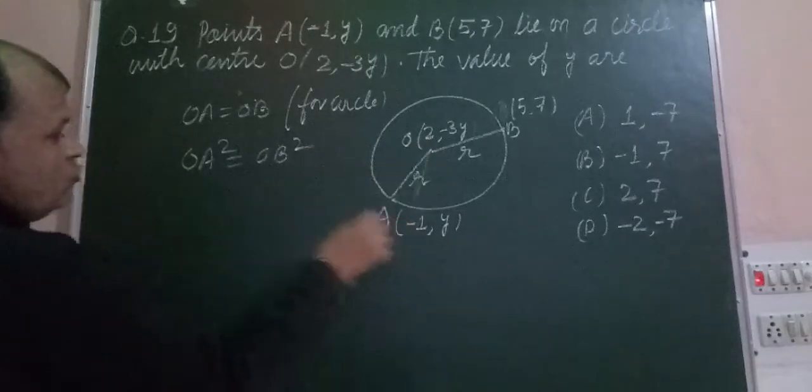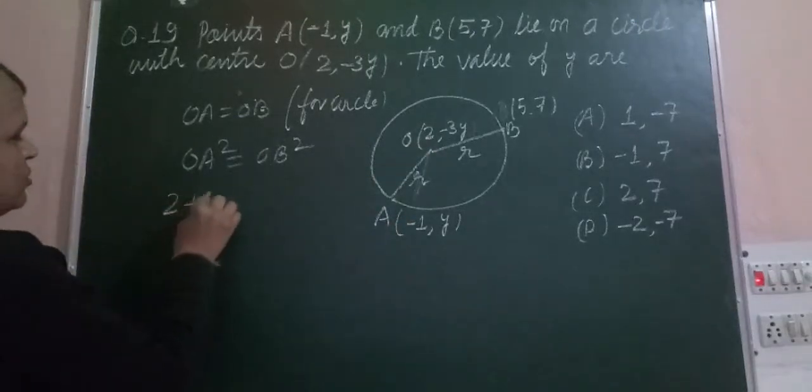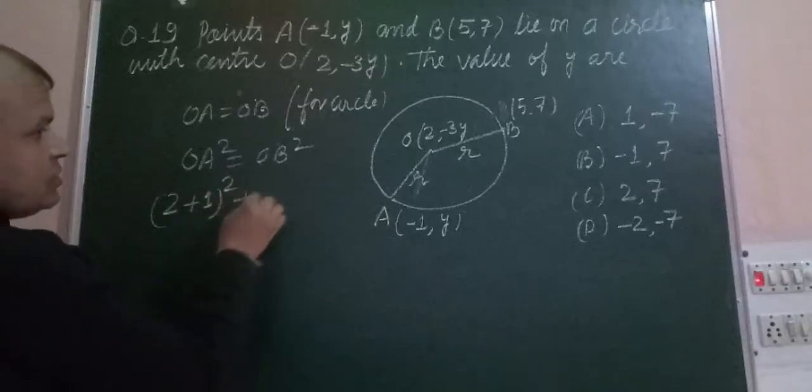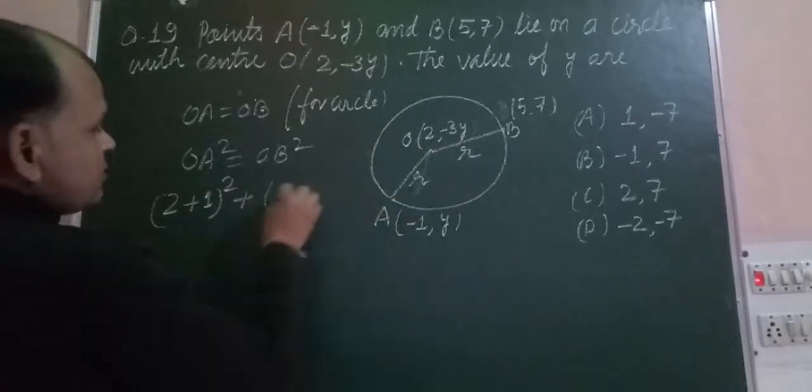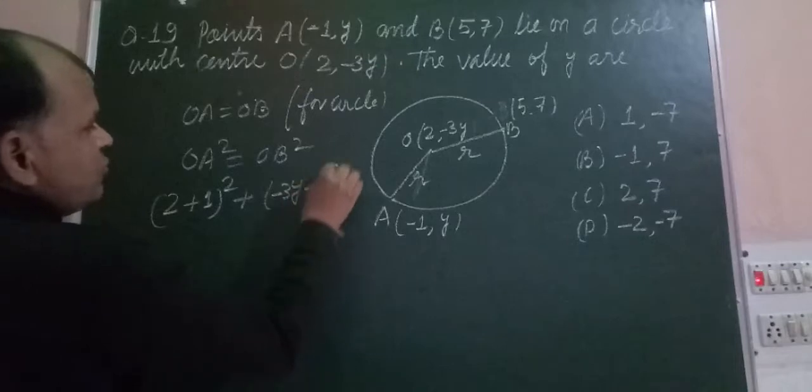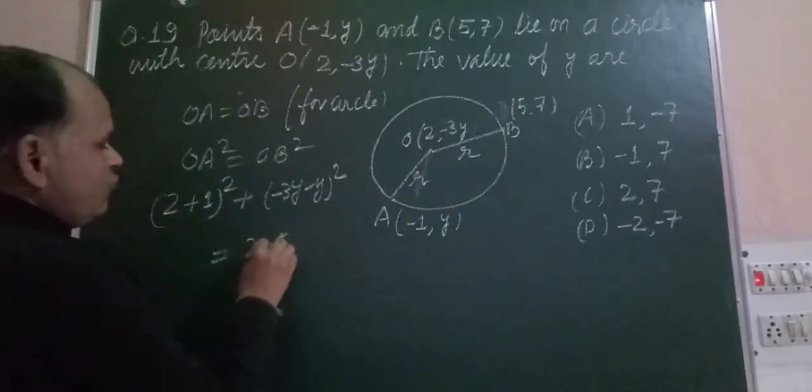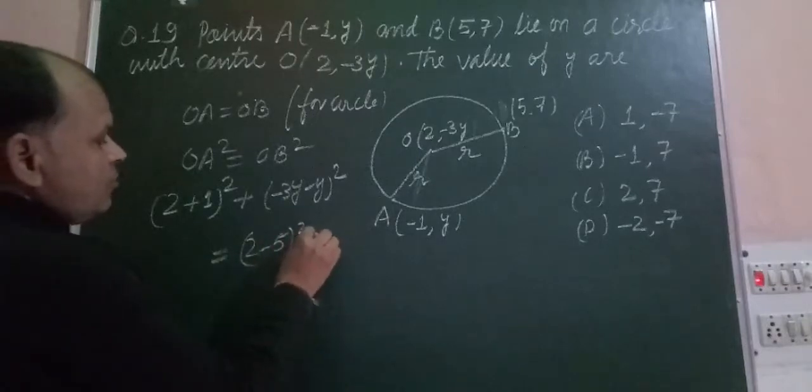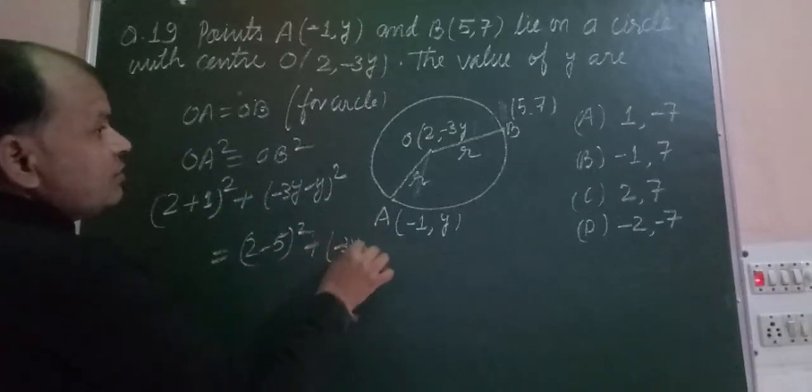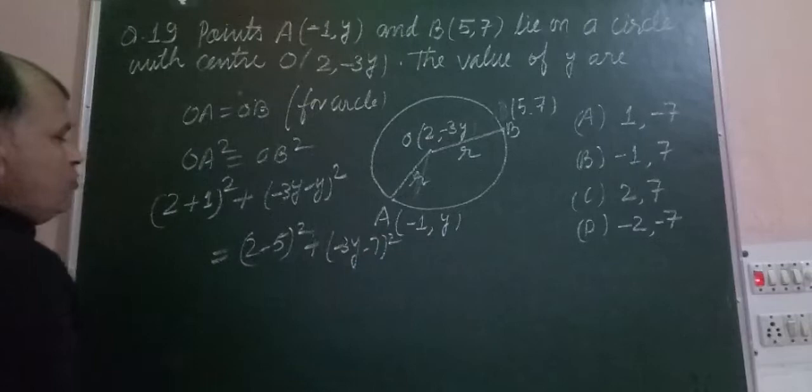So OA: (2 - (-1))² plus (-3 - Y)² equals OB: (2 - 5)² plus (-3 - 7)². For OA squared, this is (2 + 1)² which is 3² equals 9.